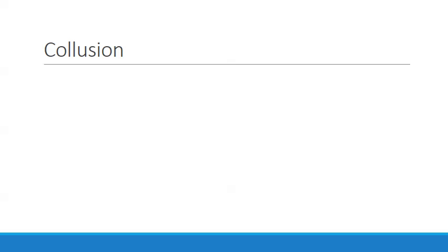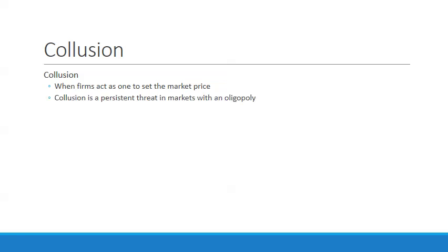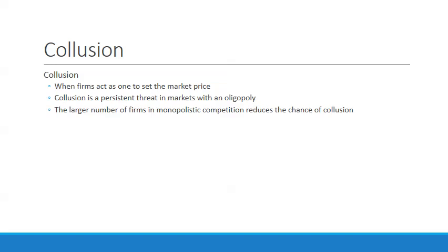Collusion is when firms act as one to set the market price. It's a persistent threat in oligopoly markets. A large number of firms in monopolistic competition reduces the chances of collusion. Collusion exists within the oligopoly because of the small number of firms who can act as one, but it's illegal. Too many firms exist in monopolistic competition for it to happen, and in a monopoly there's no reason for it since there's only one firm.